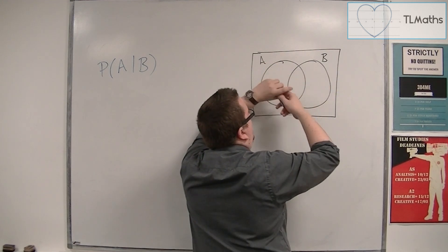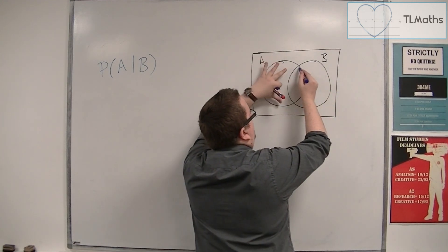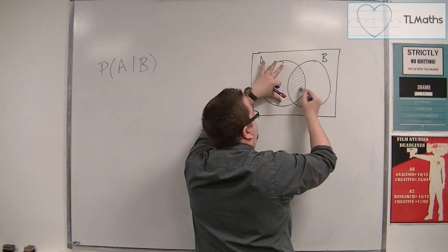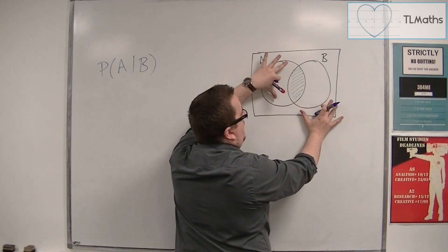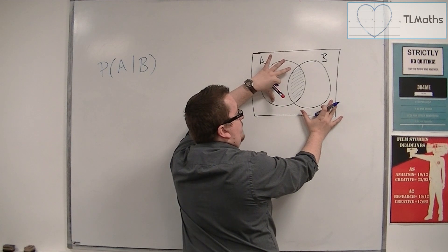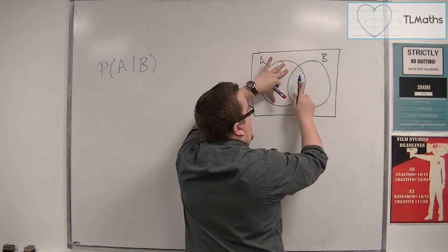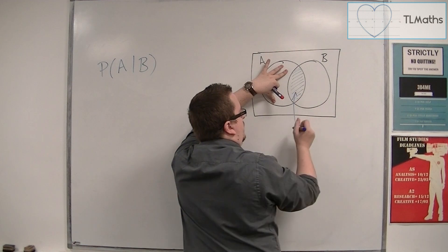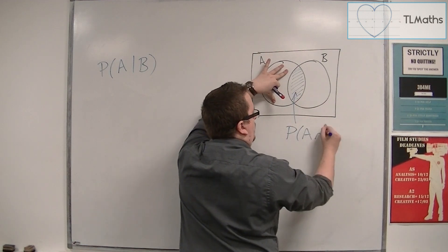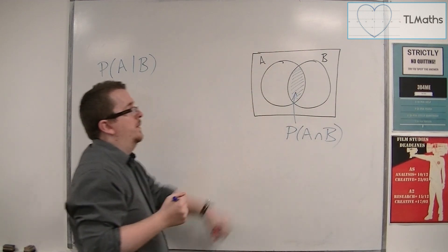Now, the probability of A happening is this bit here, if I'm just looking at the circle of B. So, that is the intersection of A and B. So,